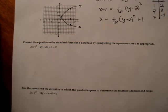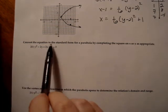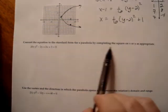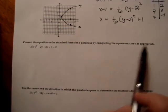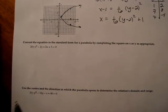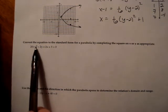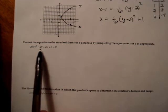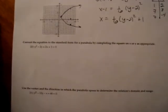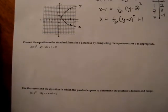We are now going to convert the equation to standard form for a parabola by completing the square on x or y as appropriate. So first let's talk about how we know this is a parabola. I see a y squared term but no x squared term, so automatically I know that this is the equation of a parabola.